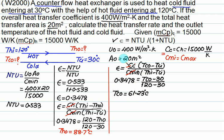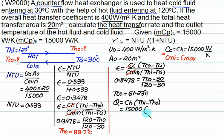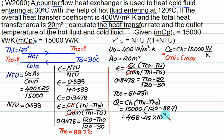Heat transfer Q equals Ch times (Thi minus Tho) equals 15000 times (120 minus 88.7), giving Q approximately 468,000 watts, or 468 kilowatts. So we move to the next question.